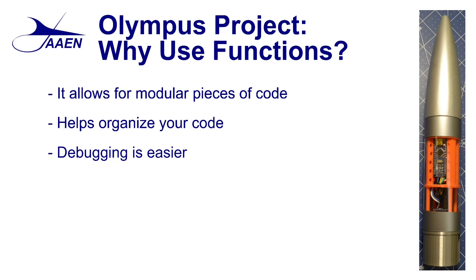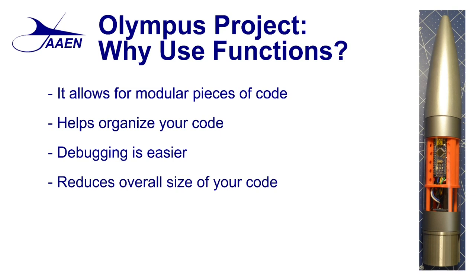It also helps reduce the overall size of your code, because we're avoiding repetition of the same code over and over again throughout the program. In the Olympus project, we use functions for changing colors of our LED light and whether it flashes or is a constant light. If we wrote the same code over and over again each time that happened, it would make the program significantly larger. Instead, we use a function, call that function, it executes and returns back, keeping the code much, much smaller.